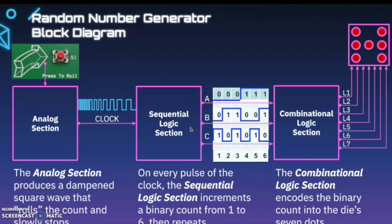That stop then goes into a sequential logic section. On every pulse of the clock, the sequential logic section increments a binary count from one to six and then repeats. Eventually the clock signals space out so far that we just get one to six and then it repeats.